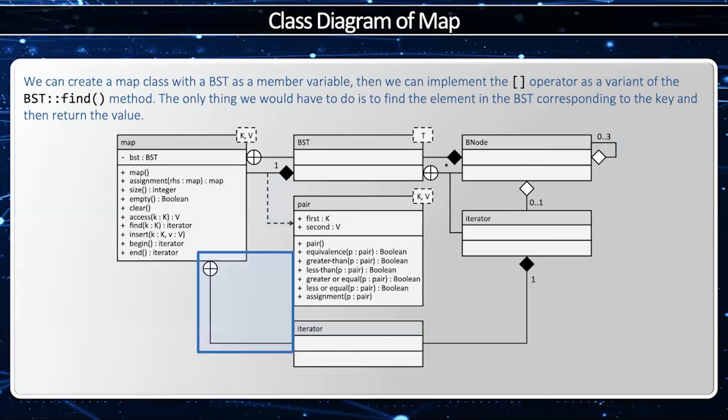The map also has an iterator, and this iterator is a nested class within map. This is a public nested class, which means the client can instantiate a map colon colon iterator. And this iterator has exactly one instance of a BST iterator.